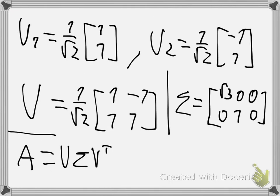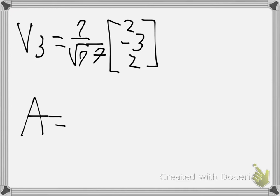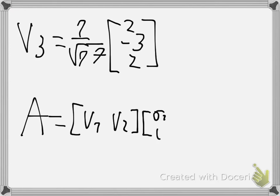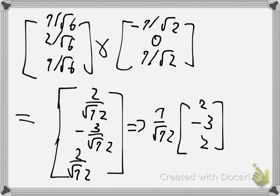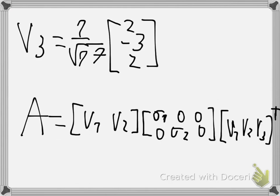You can now rewrite the decomposition: it will be [u₁, u₂] times Sigma (σ₁, σ₂) times Vᵀ, where Vᵀ contains rows v₁, v₂, v₃ transposed. You can put in the numbers and this is your singular value decomposition. Thanks for watching, I'll see you next time.